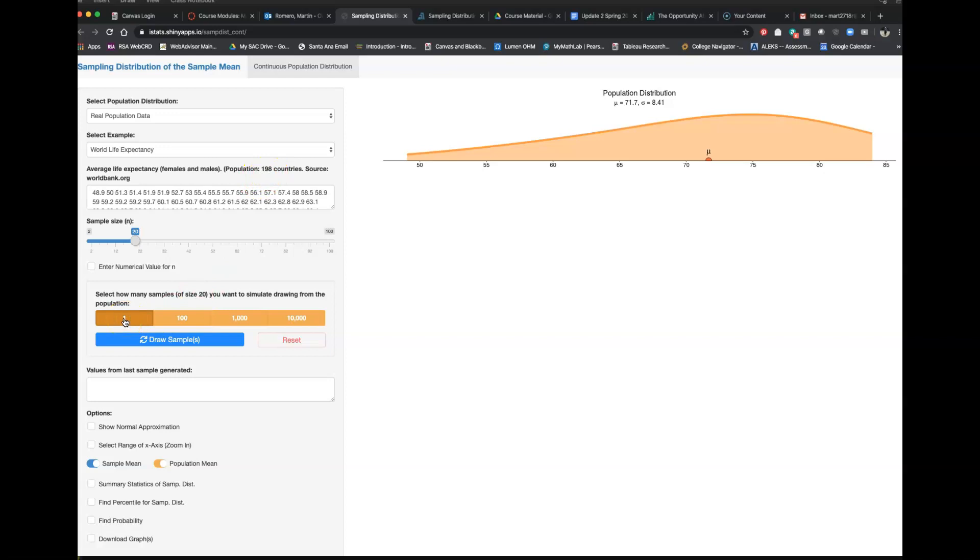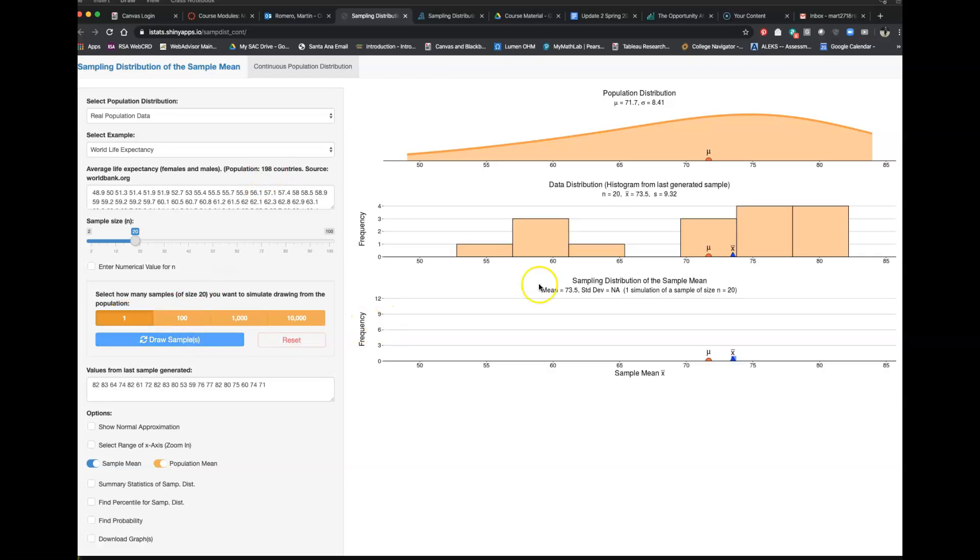And so let's say I sample 20 of these 198 countries. Here's one sample. I'm going to draw it. And so notice here. Here's the mean. Here's the distribution for my 20 countries. The mean, the sample mean is 73.5. That's a distribution of a sample, of one sample. Now, let's say I did another sample. There's the distribution. This time the X bar is 71.